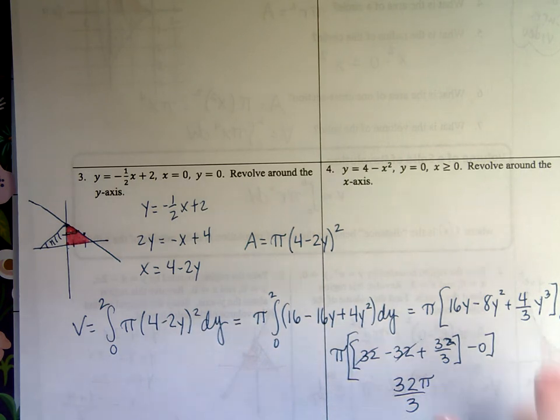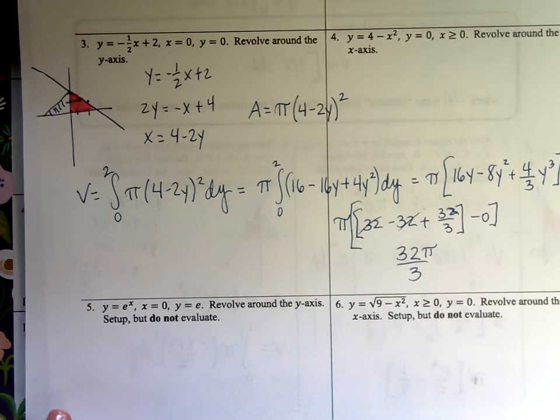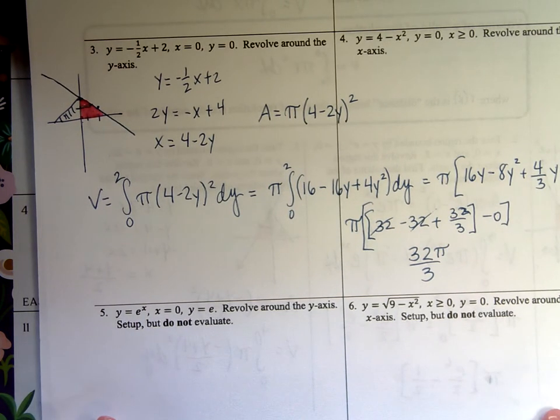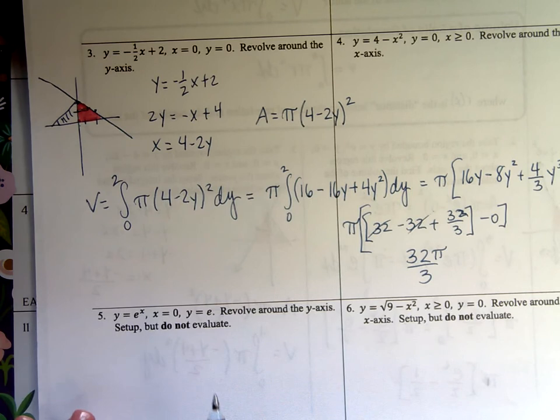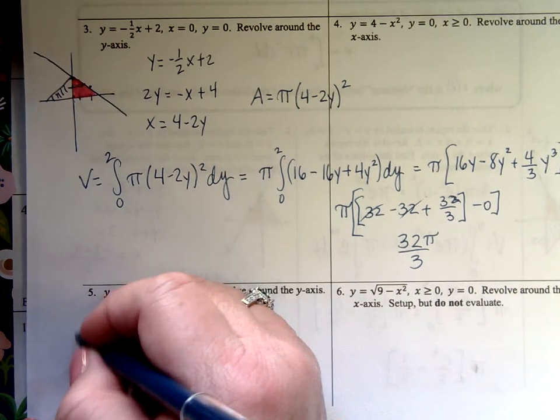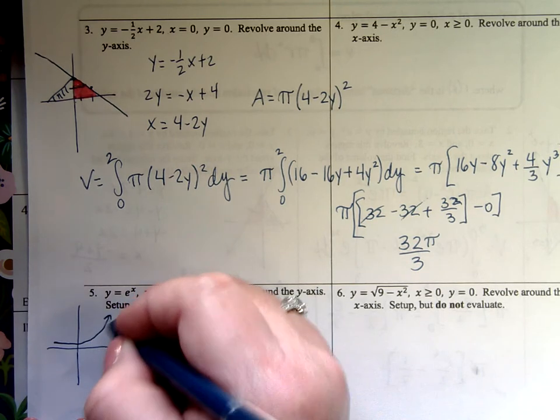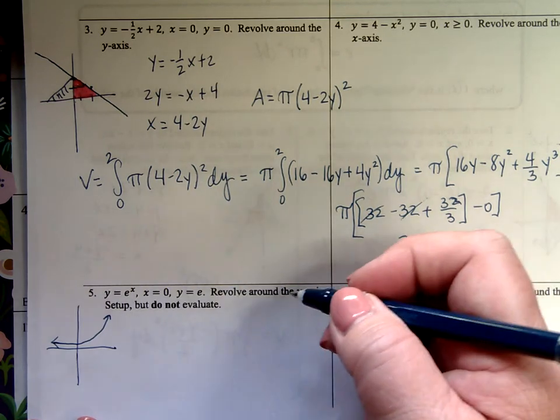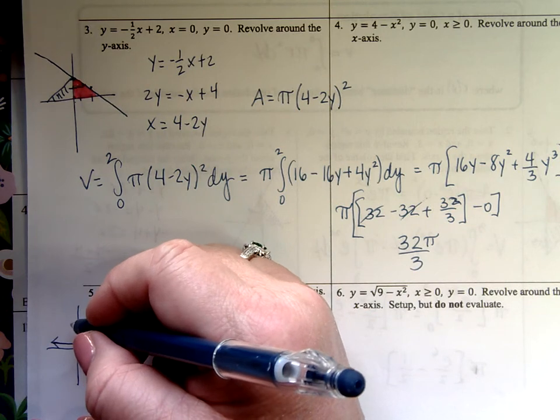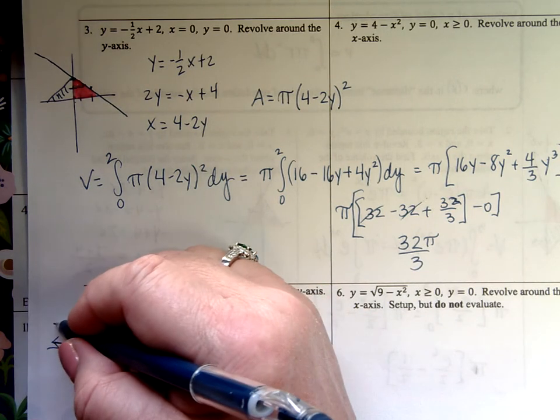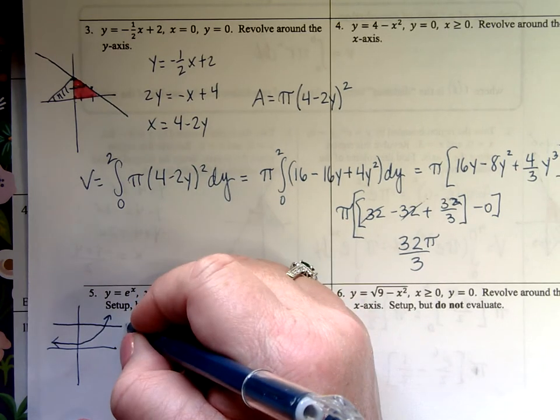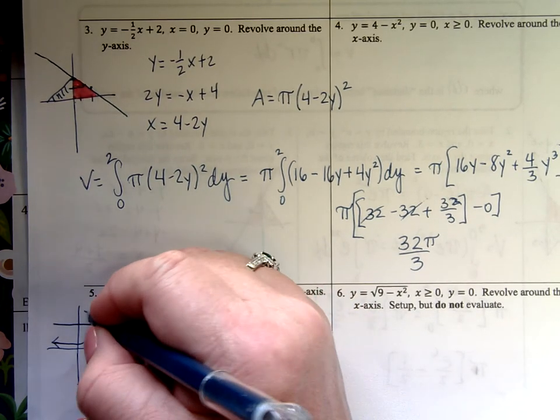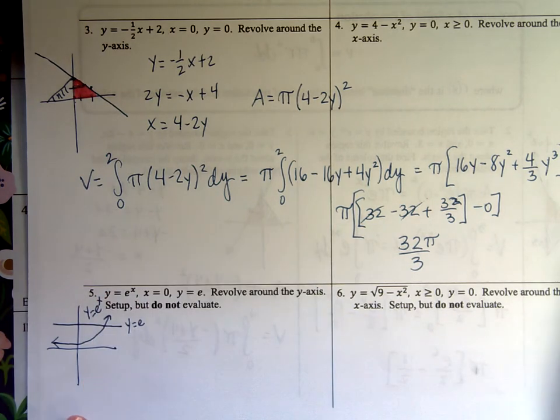All right, that's number 3. Number 5 is a little shorter, believe it or not. Number 5, you've got an e to the x, x equals 0, y equals e. Revolve around the y-axis. But don't set up, don't evaluate. And we're like, woohoo, I don't have to go through all that. So let's look at the picture again. e to the x, exponential graph. Here it is. x equals 0 is the y-axis. y equals e. y equals e is going to be a horizontal line at 2.718, where e is. y equals e. This guy is y equals e to the x. And the y-axis.